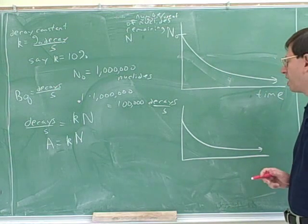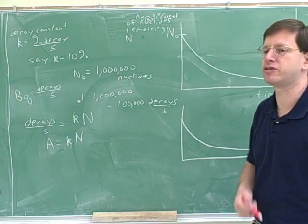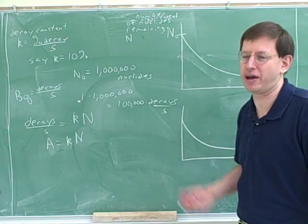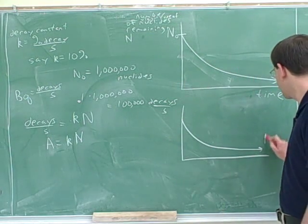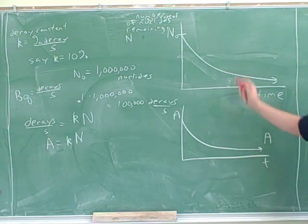In fact, over time, we're going to go, the number of nucleuses is going to approach zero. When you have, well, when you have almost no nucleuses left, you're going to have almost no decays. If there's almost no nucleuses left, then how can they decay? So the graph for the activity would have the same shape as the graph for n.